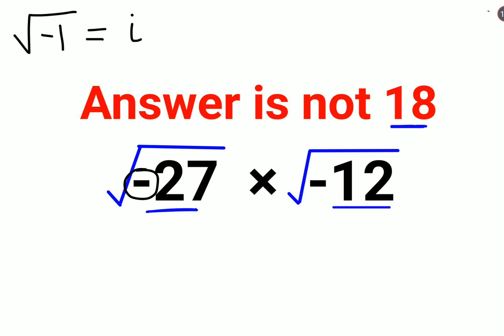So here, this becomes 27 into negative 1 into 12 into negative 1. Let's break this - we get 27 as 9 into 3, and 12 can be broken as 4 into 3.